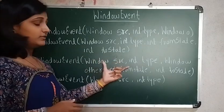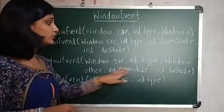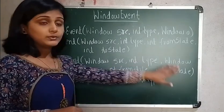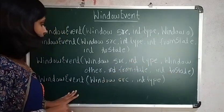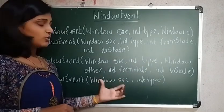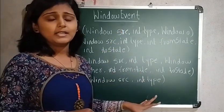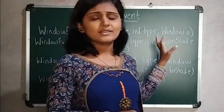Here will be the source object, the type, window other, two states - from state and to state. Or you can also specify the source and the time. This is regarding the constructor of a window event.